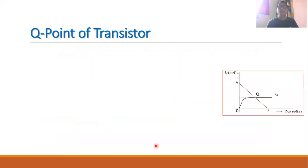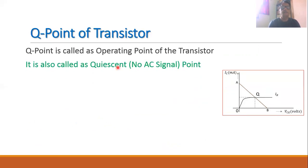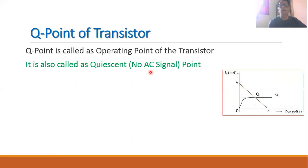Now let us understand the concept of Q point of the transistor. The Q point is called the operating point of the transistor, and many times it is also called the quiescent point. The letter Q comes from the word quiescent. Quiescent means when no AC signal is applied to the transistor — that is the quiescent condition of the transistor.